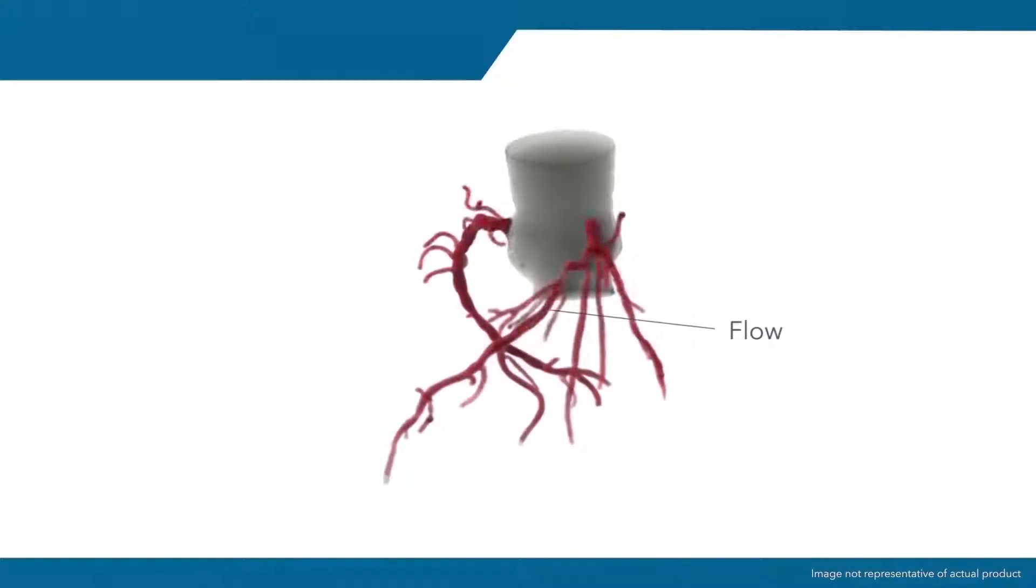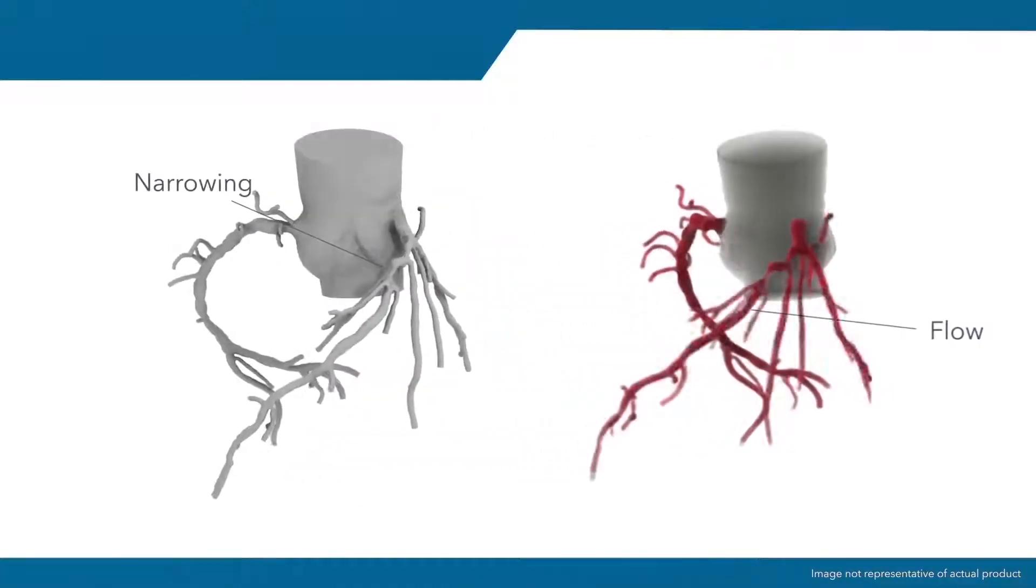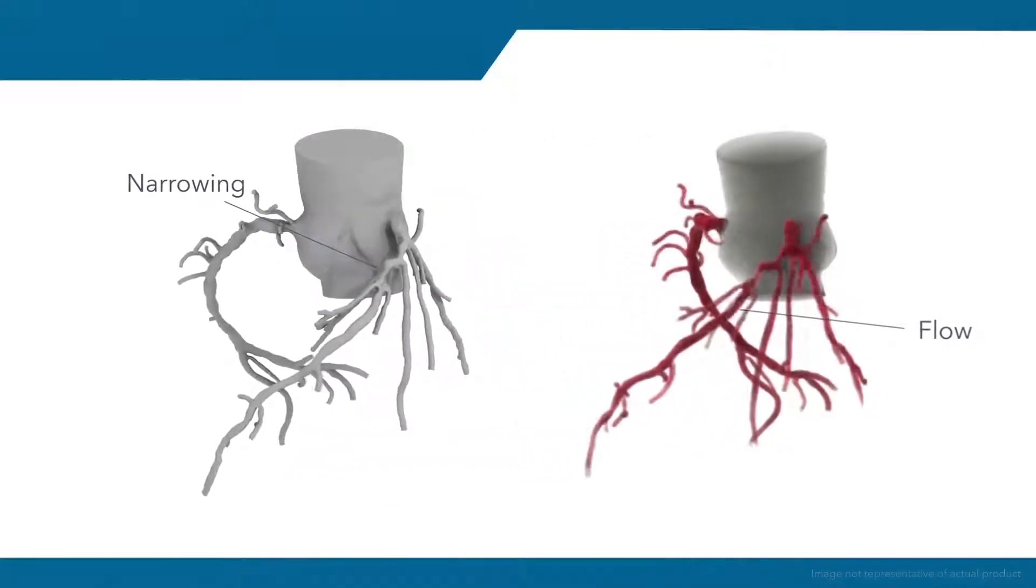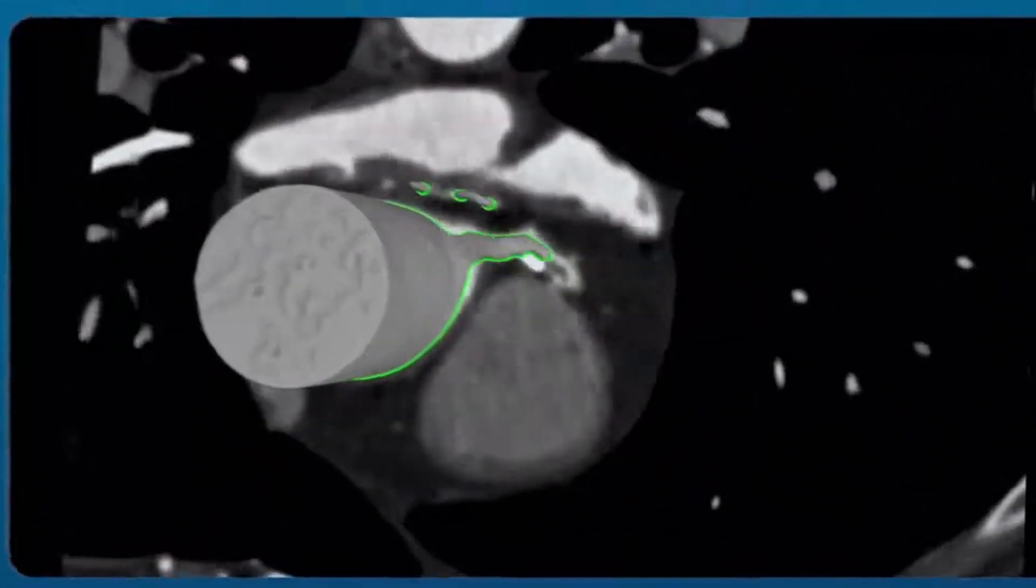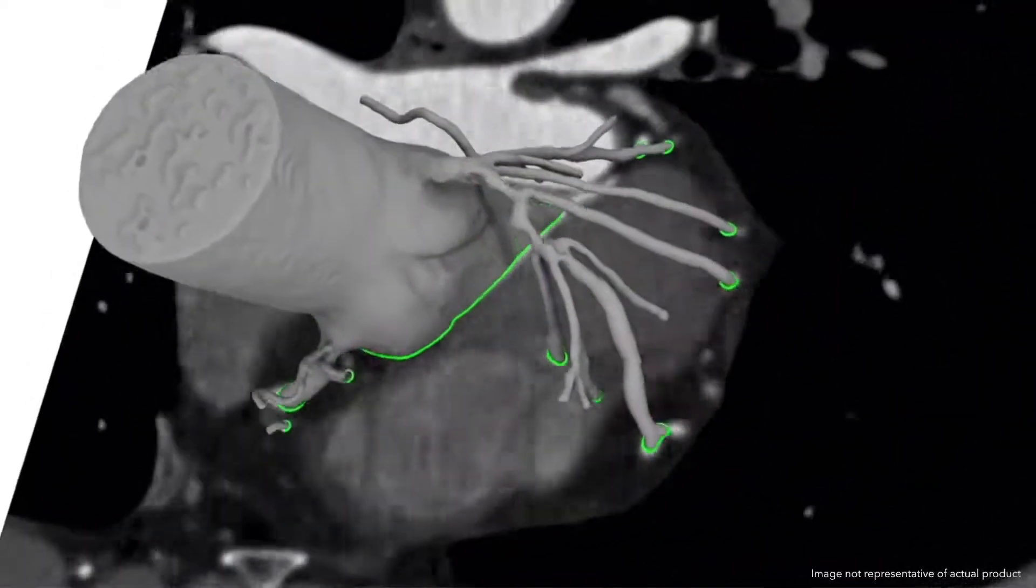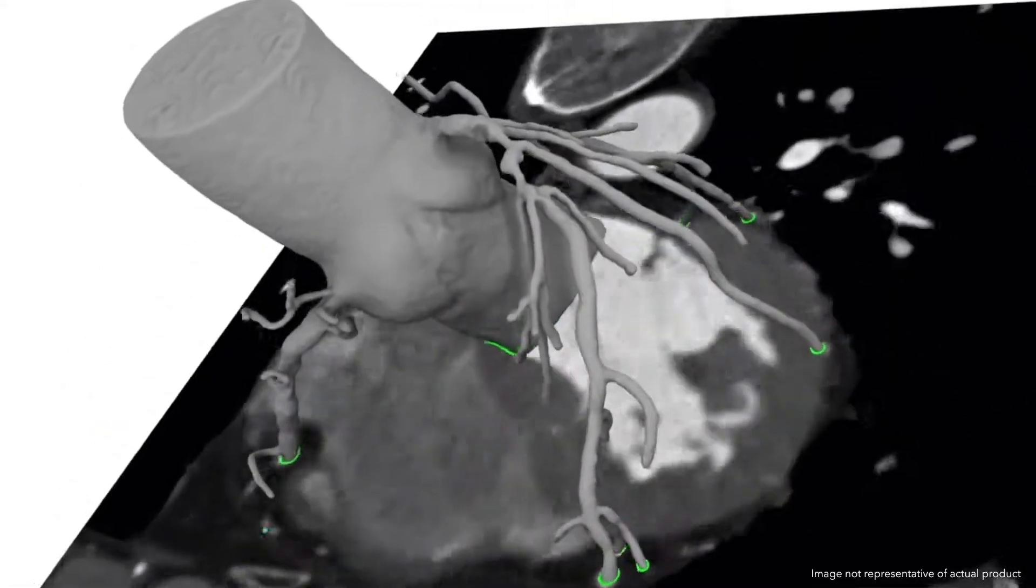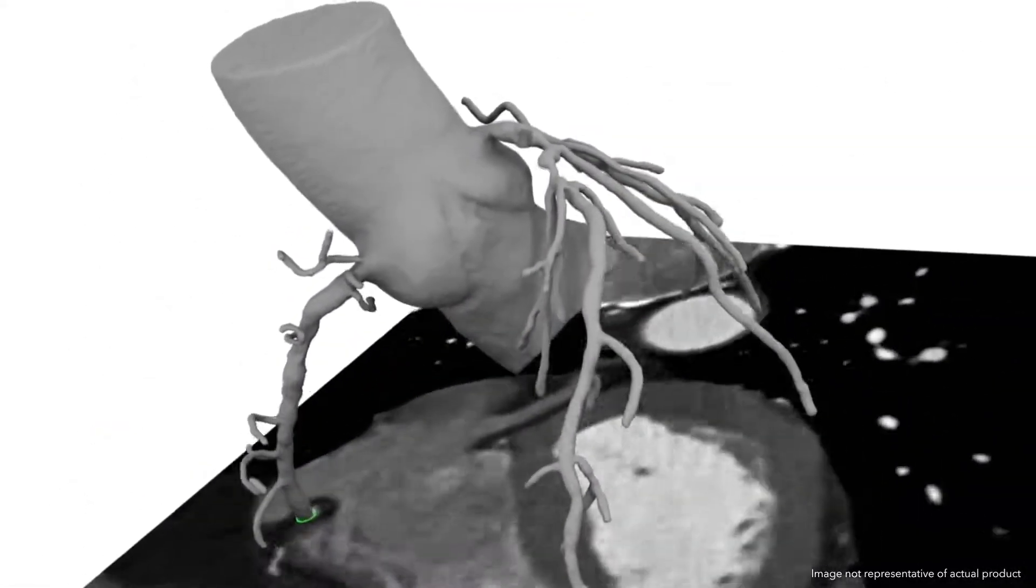HeartFlow provides these two pieces of information based on a standard coronary CT scan. From the CT images, HeartFlow creates a complete geometric and physiologic model of the patient's unique coronary anatomy.